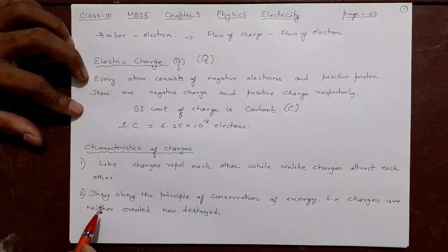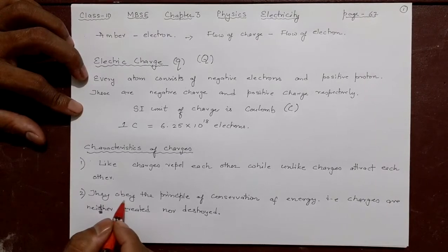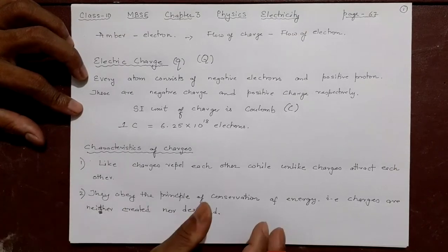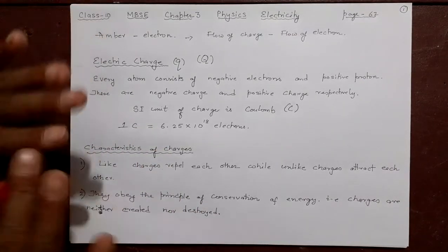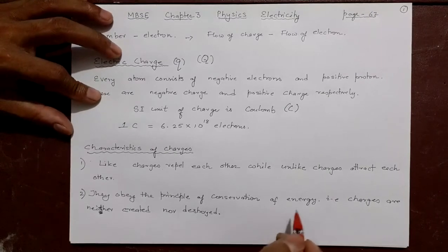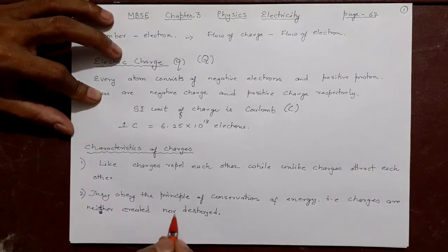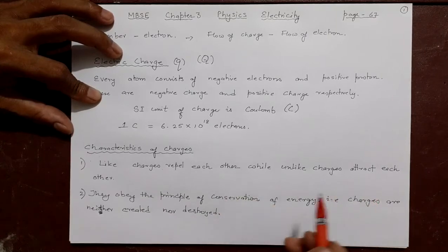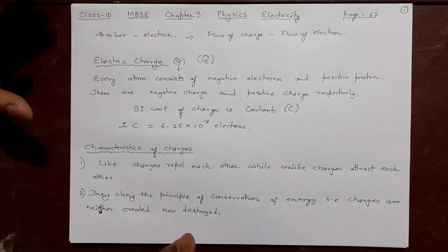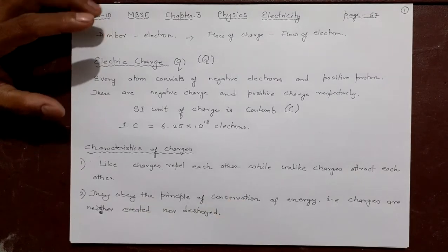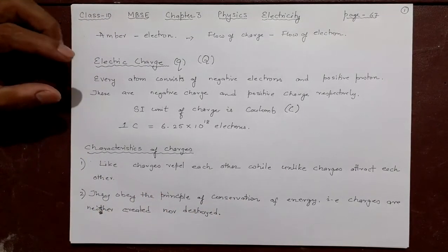The second property is that charges obey the principle of conservation — just like conservation of energy. You cannot have new charges created or some charges destroyed. A charge can go from one place to another, but no charge can be destroyed, and similarly no charge can be created. Whatever amount existed earlier, the same amount will remain — but it can flow from one body to another.